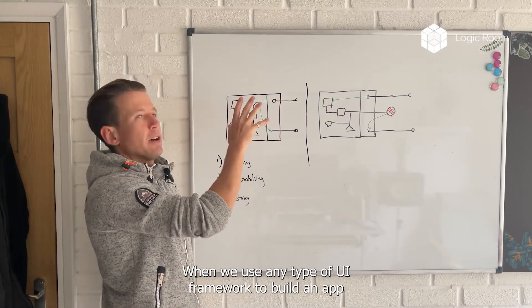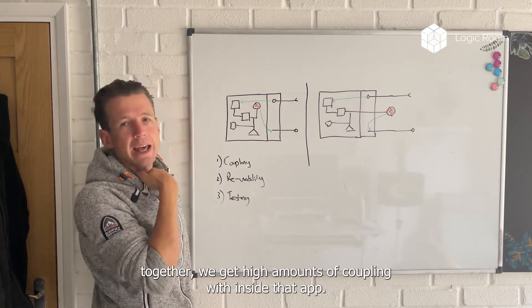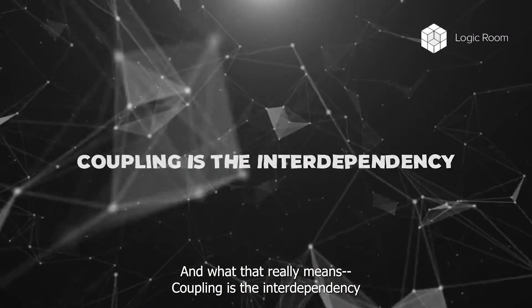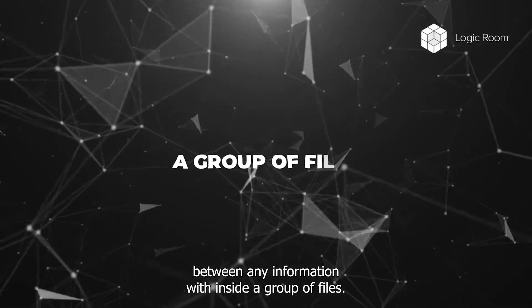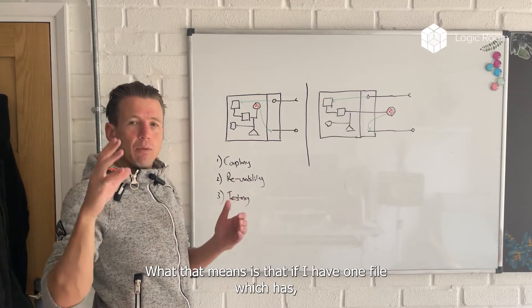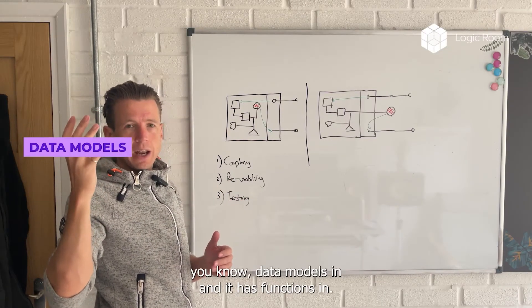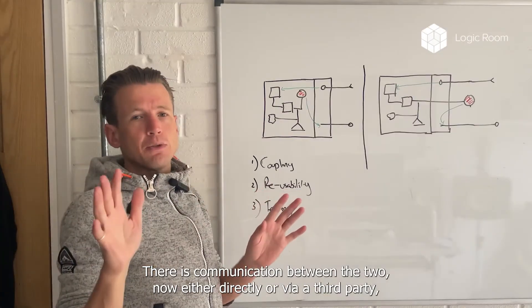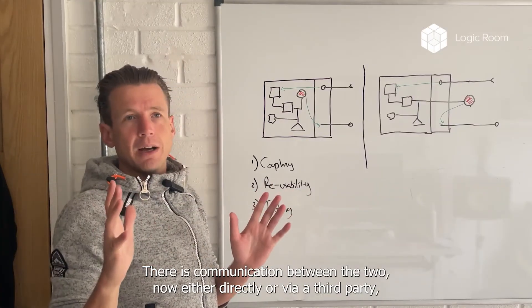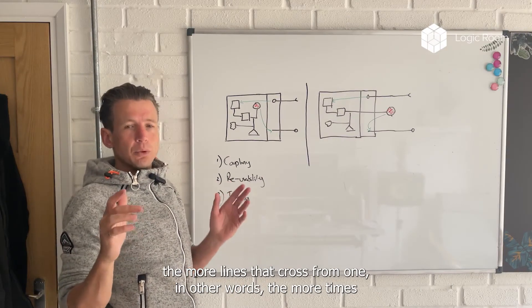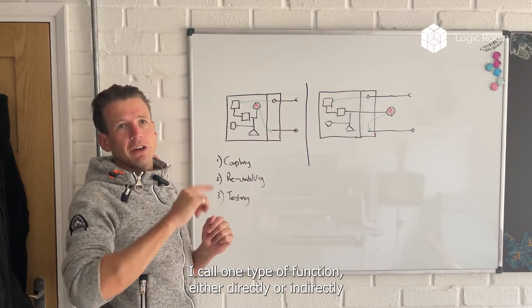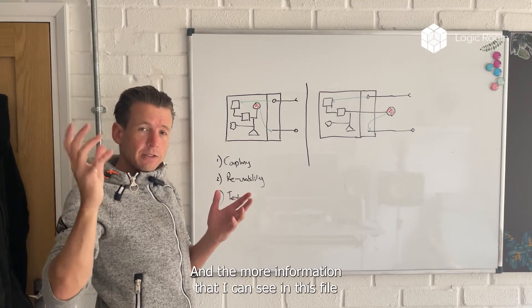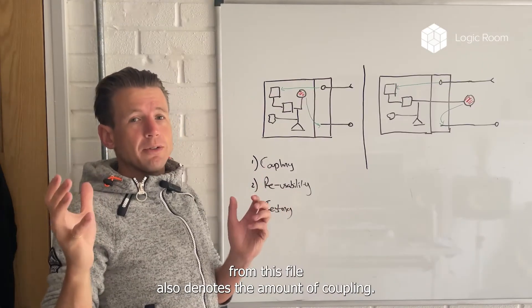When we use any type of UI framework to build an app and we put all of these things together, we get high amounts of coupling inside the app. What that really means is coupling is the interdependency between any information within a group of files. What that means is if I have one file which has data models and functions, and I have another file with data models and functions, there is communication between the two, either directly or via a third party. The more lines that cross from one - in other words, the more times I call one type of function either directly or indirectly from the other one - denotes the amount of coupling.